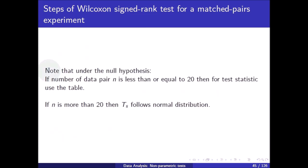Note that under the null hypothesis, if the number of pairs n is less than or equal to 20, use the table for the test statistic. If n is greater than 20, then T_s will follow the normal distribution.